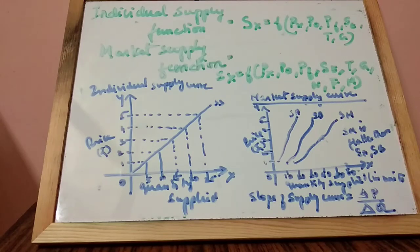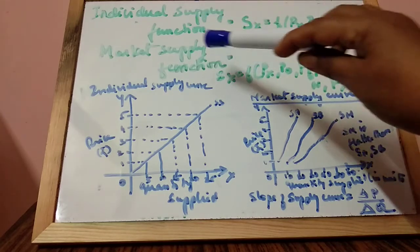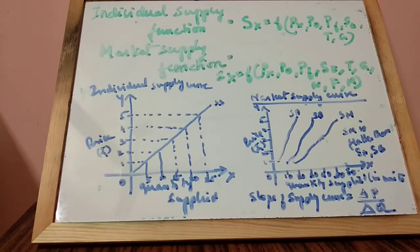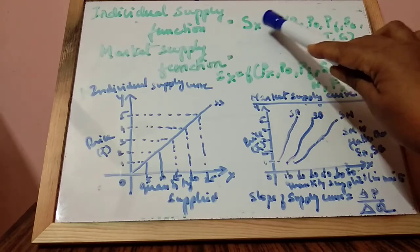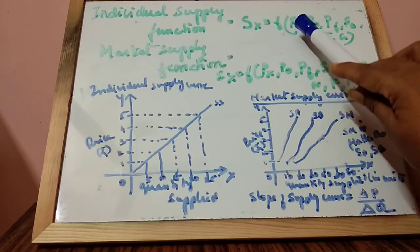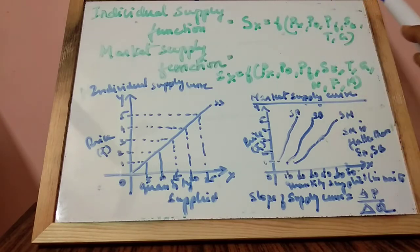Here we see individual supply function and market supply function. Individual supply function refers to the functional relationship between supply and factors affecting the supply of a commodity. It is expressed as SX = f(PX, PO, PF, ST, T, G).